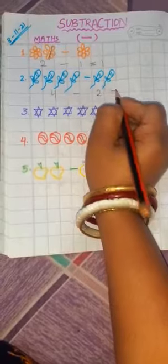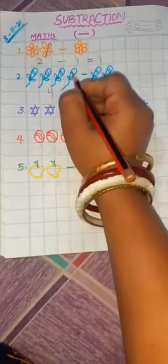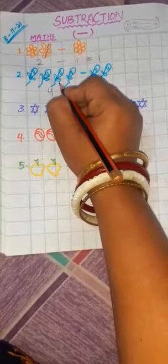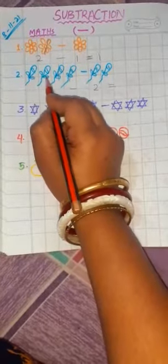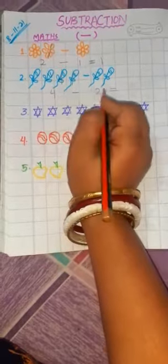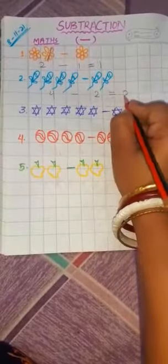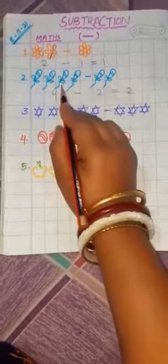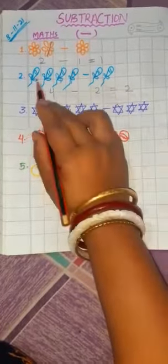Now I take away two balloons. I take away two balloons. So here I will cut two balloons. One, two. Now children, how many balloons are left here? Count them. One, two. Your answer is two. Four minus two is equal to two. Four balloons minus two balloons is equal to two balloons.